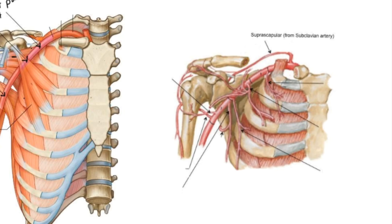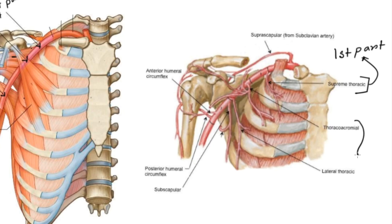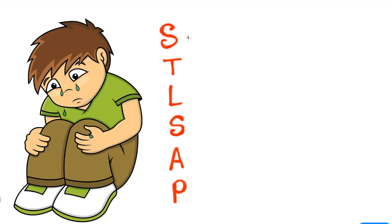Now let's see the branches first. First branch is supreme or superior thoracic artery. This is thoracoacromial artery and lateral thoracic artery. Next is subscapular artery, and then posterior humeral circumflex artery and anterior humeral circumflex artery. So superior thoracic artery is the branch of first part, thoracoacromial and lateral thoracic are the branches of second part, and subscapular anterior and posterior humeral circumflex are the branches of third part.